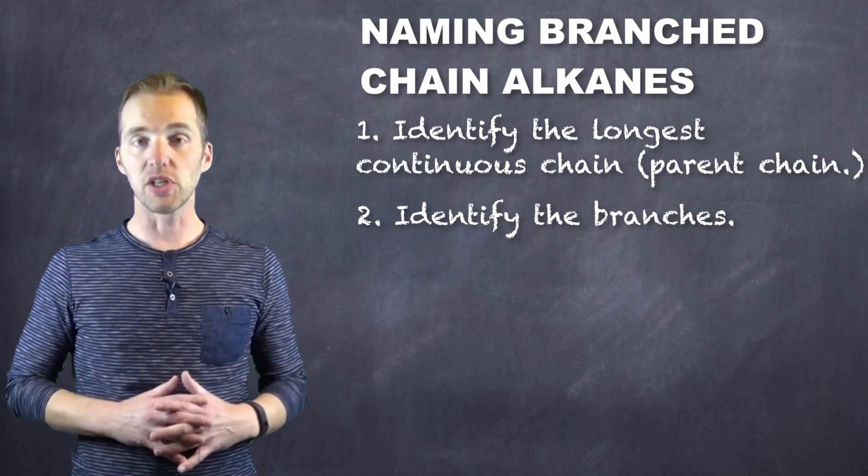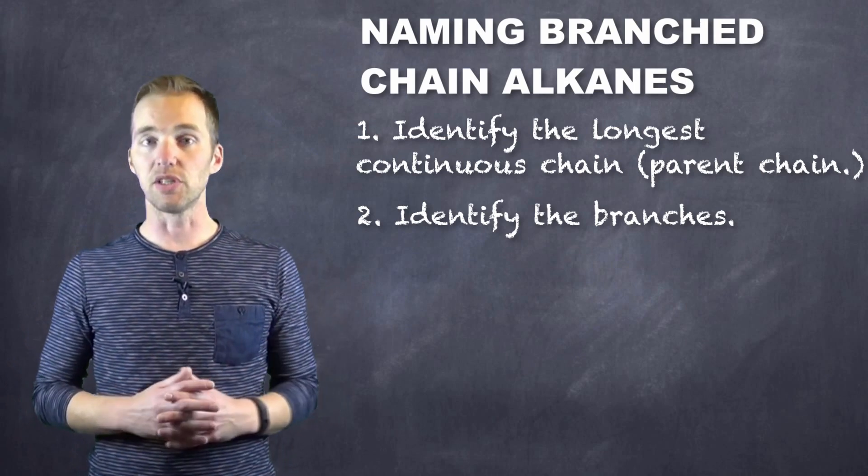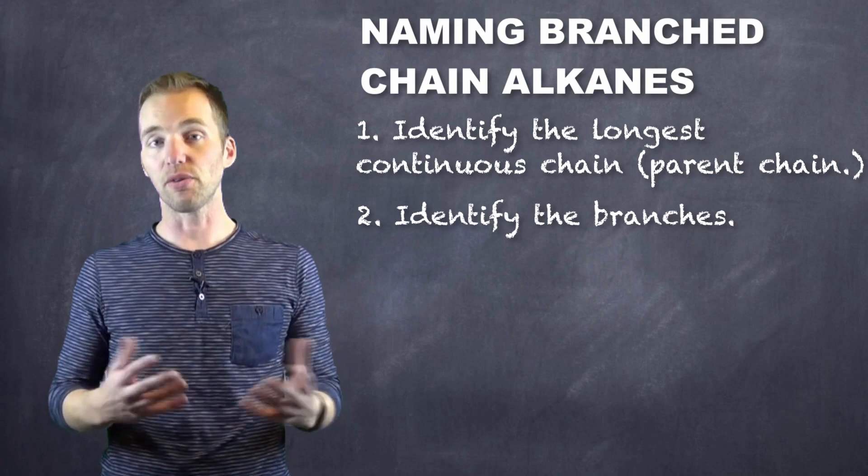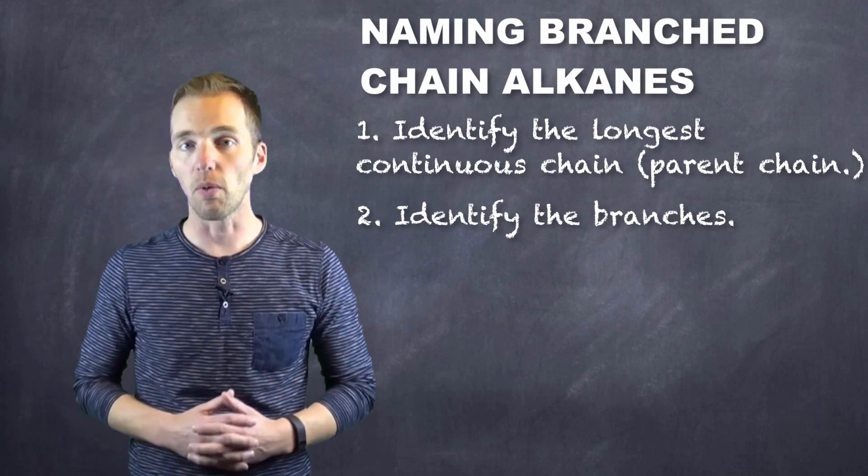If there's one carbon branching off of the parent chain, we have a methyl group. If there are two carbons in that same chain, we have an ethyl group. And if there are three carbons in a chain, then we have a propyl group, and so on.